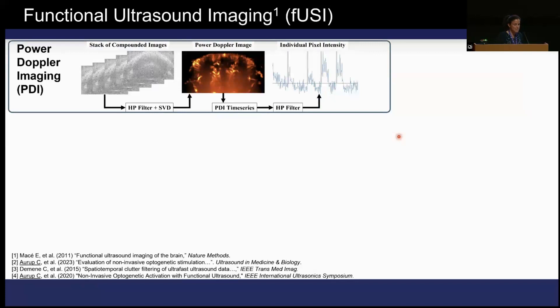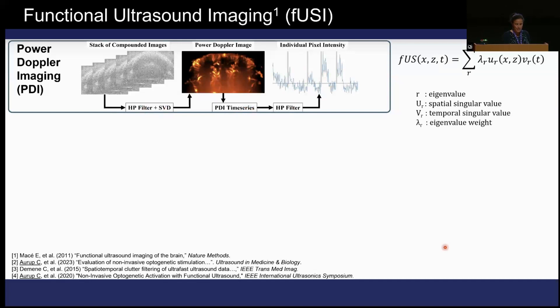It is based on power Doppler, which uses the Doppler effect with autocorrelation — looking at the power under the curve. Anatomically, ultrasound of the brain doesn't compete with MRI, so you guys are in the right line of business. But when it comes to functional imaging, we can do a lot. Using a high-pass filter with singular value decomposition, you can look at different blood vessels according to actual flow, separate them by timeline on the power Doppler, and look at individual pixel intensity. It can also show positivity of the actual brain.